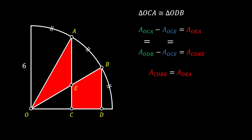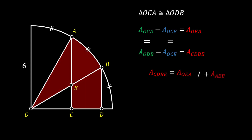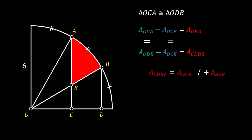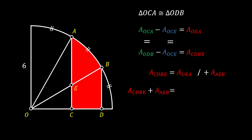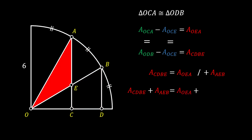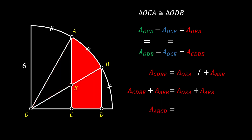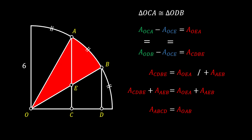Now let's use one small mathematical trick. Let's add the area AEB to both sides of the equation. On the left side we have area CDBE plus area AEB, and as you can see those two combined areas make our wanted red shaded area. This equals the area of triangle OEA plus area EAB. This means that our red shaded area ABCD is actually equal to the area of the circular sector OAB.